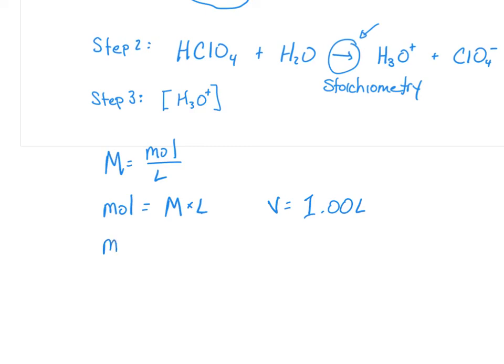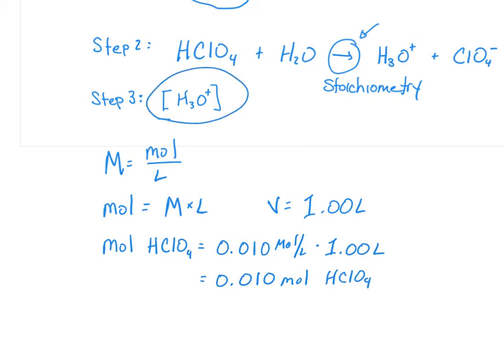So our moles of HClO4 is going to be equal to our 0.01 moles per liter, our molarity, times our volume, which is 1.00 liters, which is equal to 0.010 moles of HClO4.